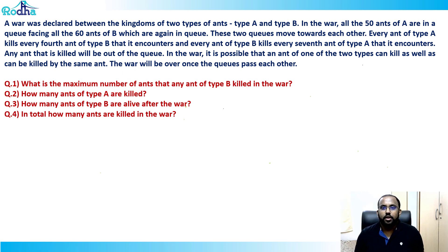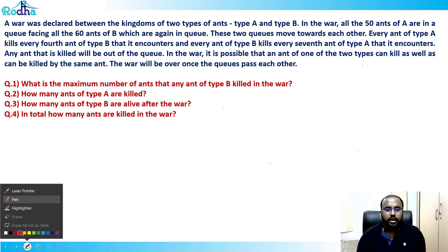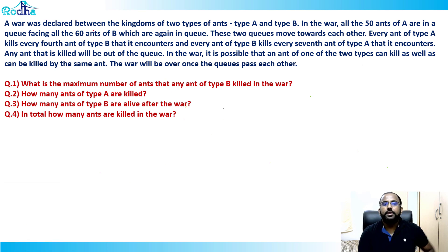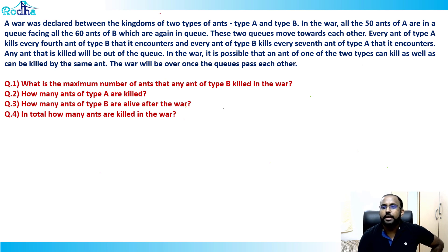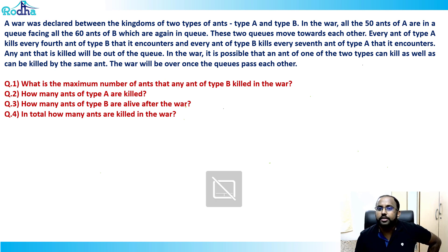Let's look at this set — a very good set you can put under quant-based logical reasoning. The set says that a war was declared between the kingdoms of two types of ants: type A and type B. In the war, all 50 ants of A are in a queue facing all 60 ants of B, which are also in a queue. These two queues move towards each other.